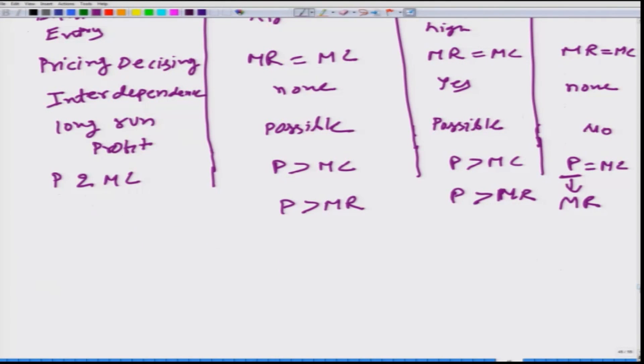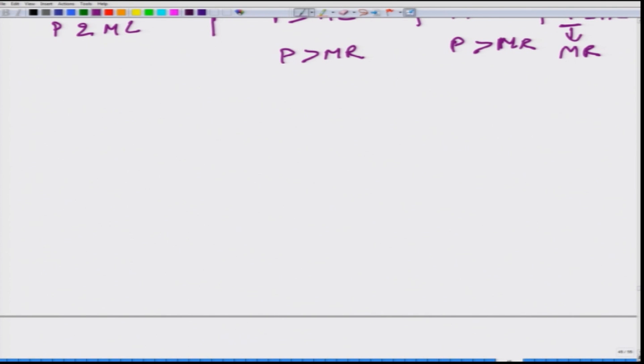This is the comparison table. Let us talk about some empirical measure of market structure, how can we figure out which market environment that we are in. So we are going to talk about two different measures.